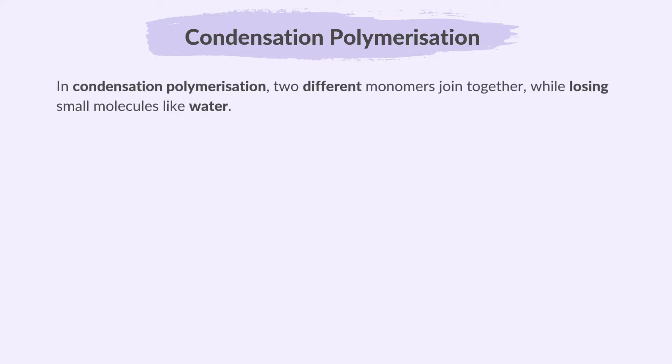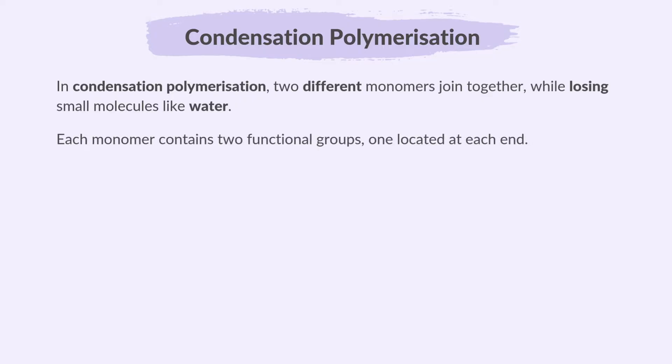In condensation polymerization, two different monomers join together while losing small molecules like water. Each monomer contains two functional groups, one located at each end. The primary difference between addition and condensation polymerization is that addition polymerization occurs without the formation of byproducts, while condensation polymerization produces small molecules, often water, as byproducts during polymer formation.